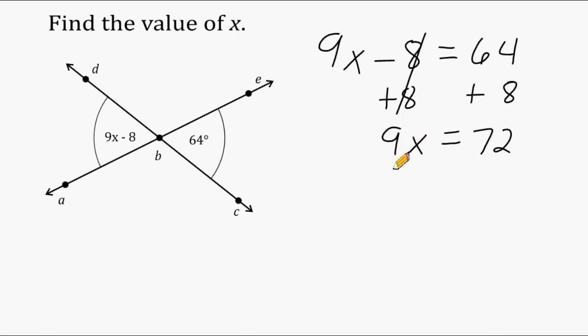Now 9 and x are being multiplied, and we have to do the inverse operation, which is to divide. And whenever you divide a coefficient by itself, it turns it into 1.